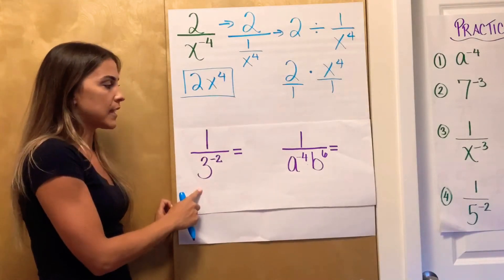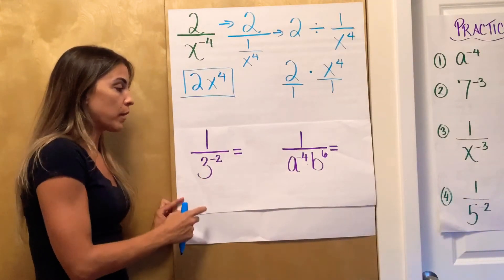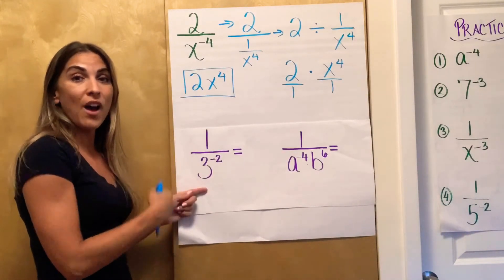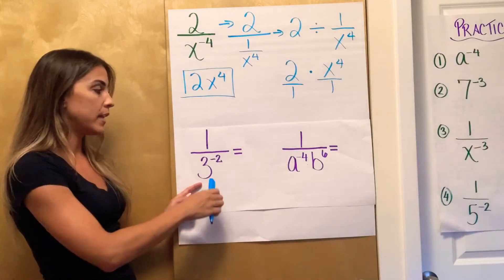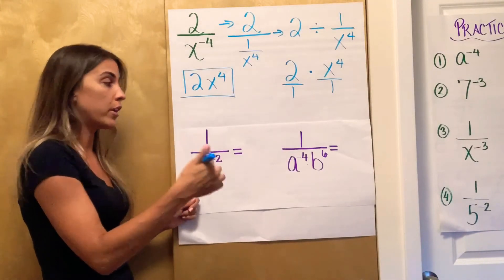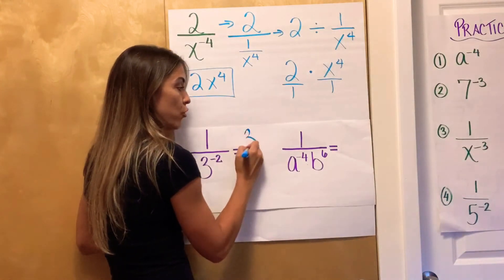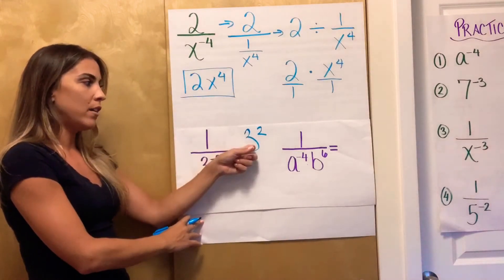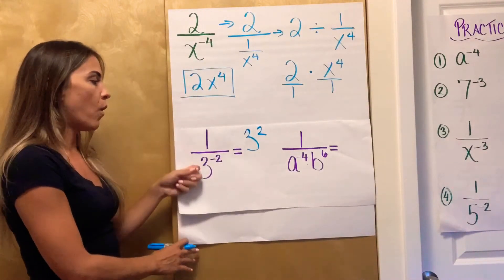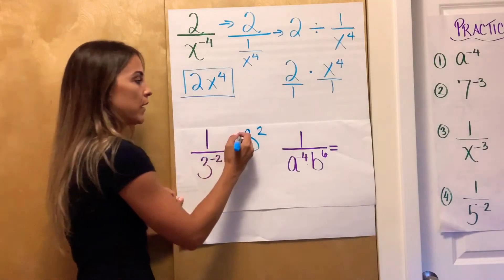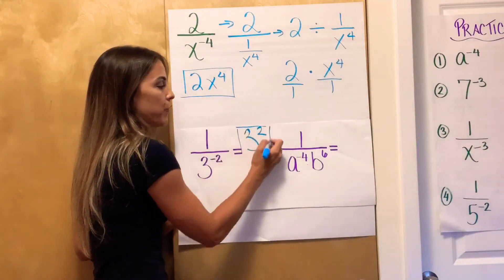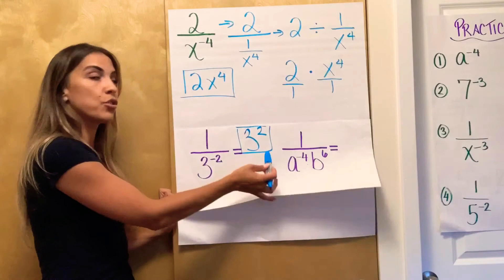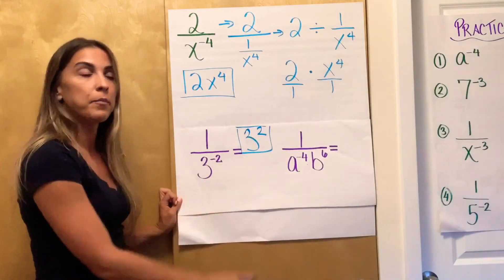Let's watch this concept apply: 1 over 3 to the negative 2nd. Move the base that has the negative exponent — the 3 has it. Right now it's in the denominator, so the other side is the numerator. Move that 3 up into the numerator in order to make the exponent a positive 2. I don't need the 1 because 1 times anything is just itself, so 1 over 3 to the negative 2nd is the same thing as 3 to the positive 2nd, or 9.